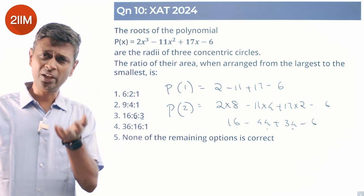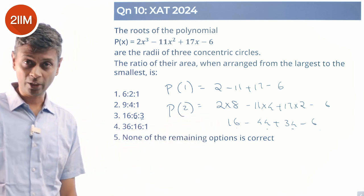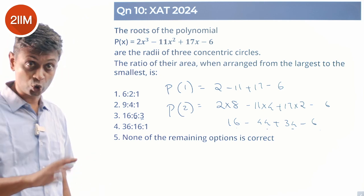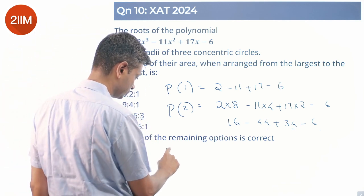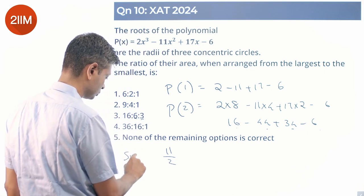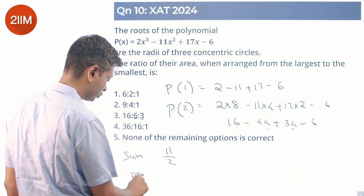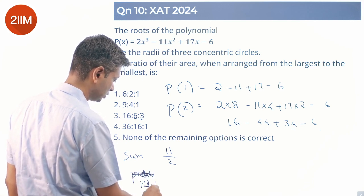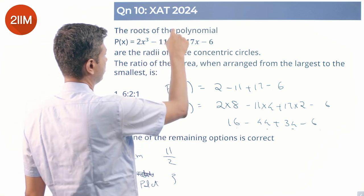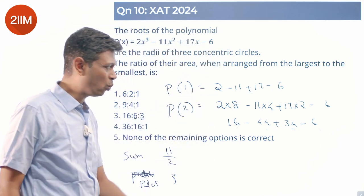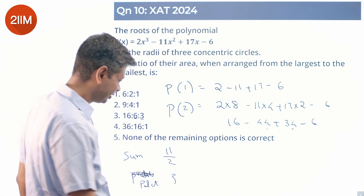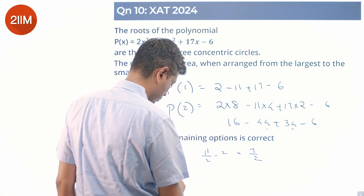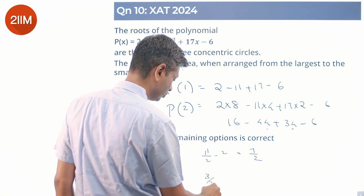Now we can say 2 works. One of the roots is 2. Sum of the roots is 11/2, product of the roots is 3. One root is 2, so from 11/2 subtract 2, this is 7/2. From 3 divide by 2, this is 3/2.